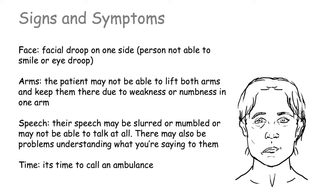The signs and symptoms of stroke can be quite varied depending on where in the brain is being damaged. However, the main signs of stroke can be remembered by the FAST acronym. F stands for face — you'll usually see a facial droop on one side, where the person is not able to smile or properly open their eyes. A stands for arms — the patient may not be able to lift both arms due to weakness or numbness. S is for speech — the person's speech may be slurred or mumbled, or they may not be able to talk at all, and there may also be problems understanding what you're saying to them.